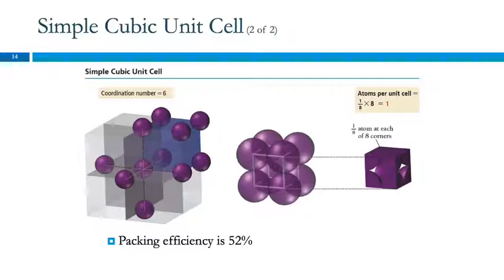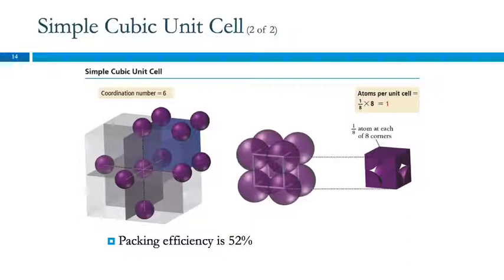The one-eighth atom in each of the eight corners composes the unit cell. So this is the piece reproduced to make the entire pattern. Each corner is one-eighth of one of these atoms, so we say there is one atom in the cell — the equivalent of one atom. It's parts of eight different atoms, but they add up to be one atom in the unit cell. If we know the radius of the atom, we can calculate the volume of the unit cell, the volume of an atom, and find what percentage is occupied versus empty space.